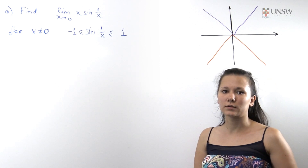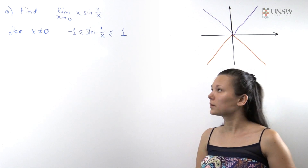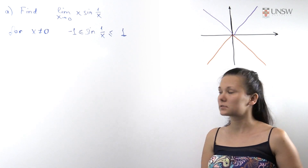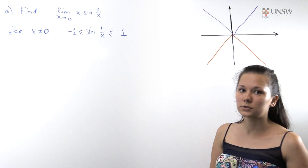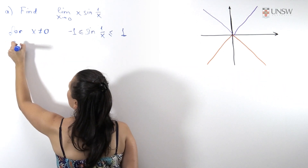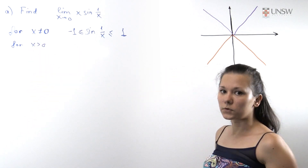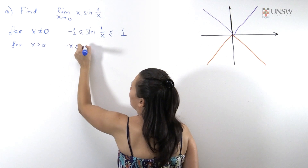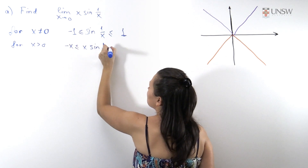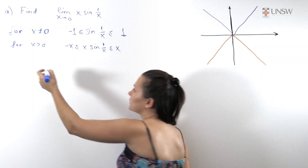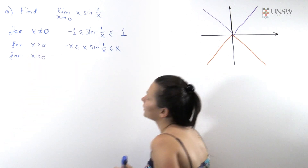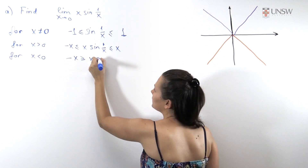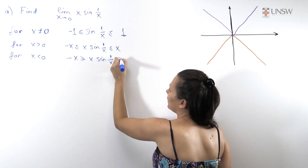Now we would like to multiply these inequalities by x, but we need to be a bit more careful because x can take both negative and positive values. So we need to handle positive x first and then negative x. When x is positive we can multiply our inequality without any changes. But for negative x, when we multiply, the inequality swaps, so that we have minus x is larger than x sine 1 over x and larger than x.